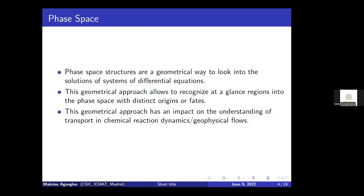This talk will have two parts. The first part is theoretical, where I will present the main ideas and talk about phase space, the method of Lagrangian descriptors, and chemical reaction dynamics. In the second part, I will present the four-well example. Phase space structures are a geometrical way to look into the solutions of systems of differential equations. This idea was introduced first by Poincaré in the context of celestial mechanics, and has had great impact in many areas.